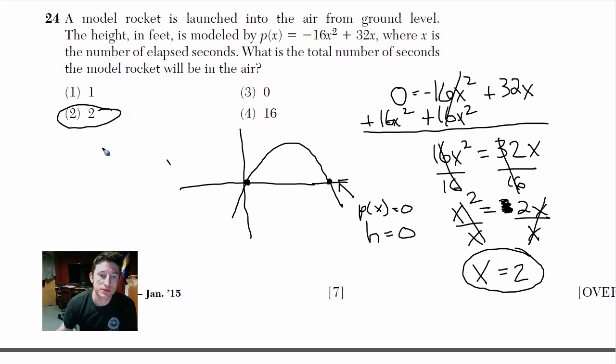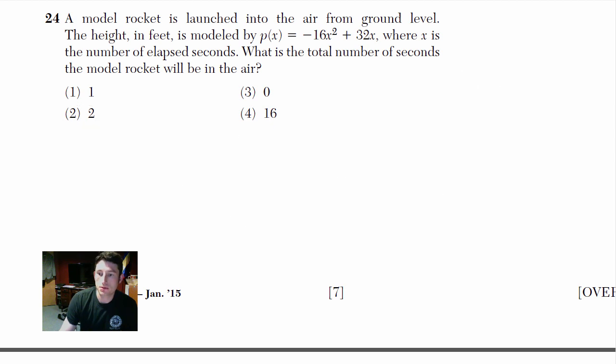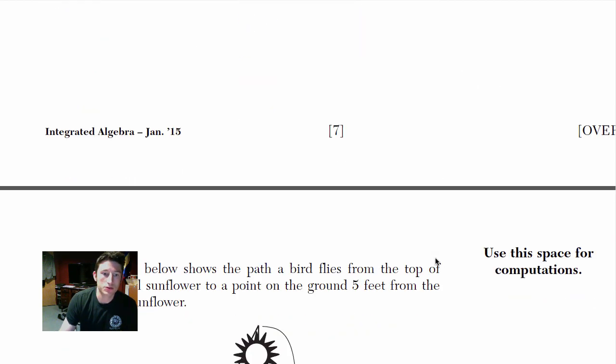X equals 2. So again, we're just looking for, they want to know the total number of seconds that will be in the air. So that's basically after the flight is done. So after it's flown, its height's going to be zero. So since we know the height's going to be zero, we plug it into that one side there, the P of X, and we just solve. Okay. Alright, let's move down. 25.